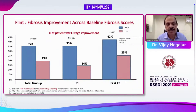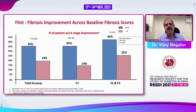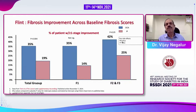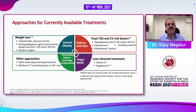Obeticholic acid is the only anti-fibrotic drug currently available. The FLINT study showed improvement in 35% of the total group and F1 fibrosis stage, 42% in F2 and F3 stages. The main problems were intense pruritus and high LDL levels in these patients.